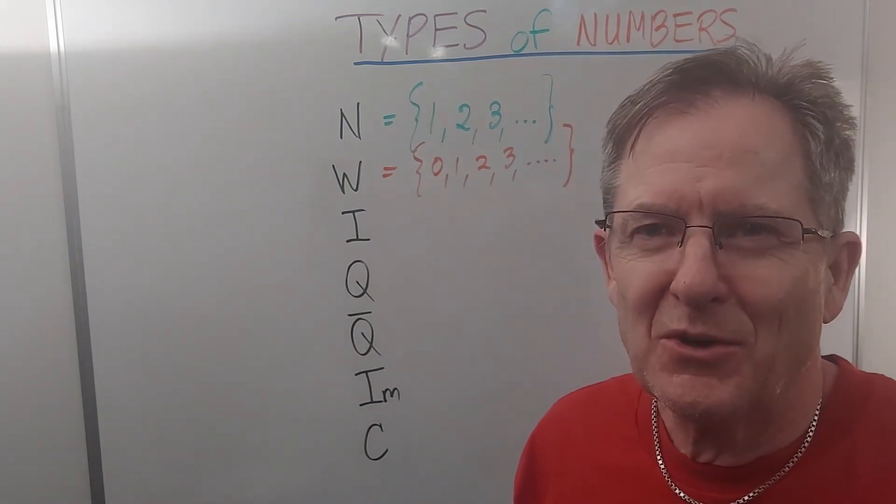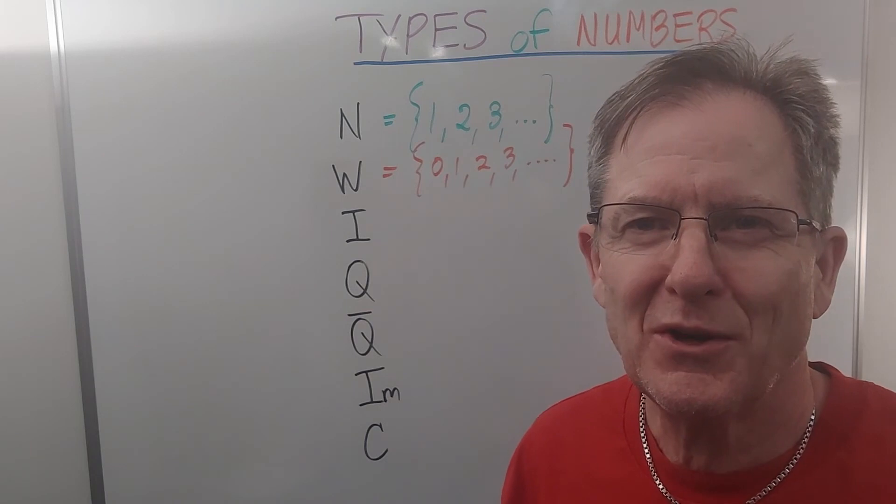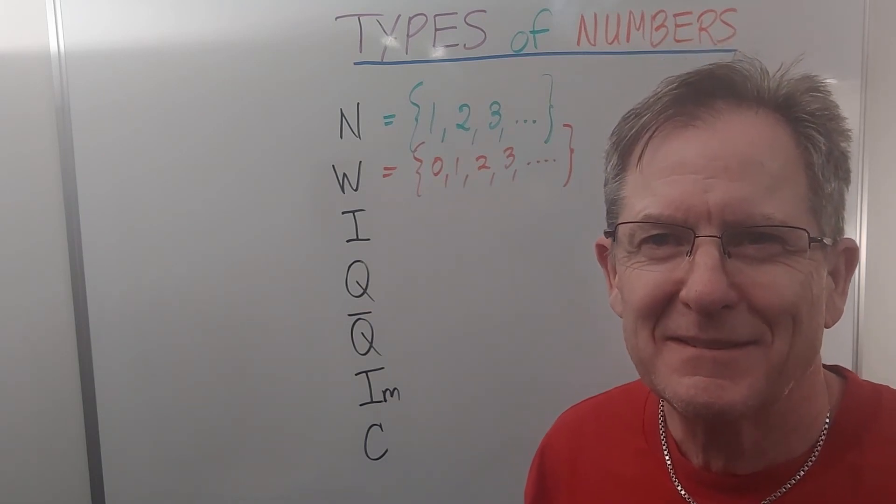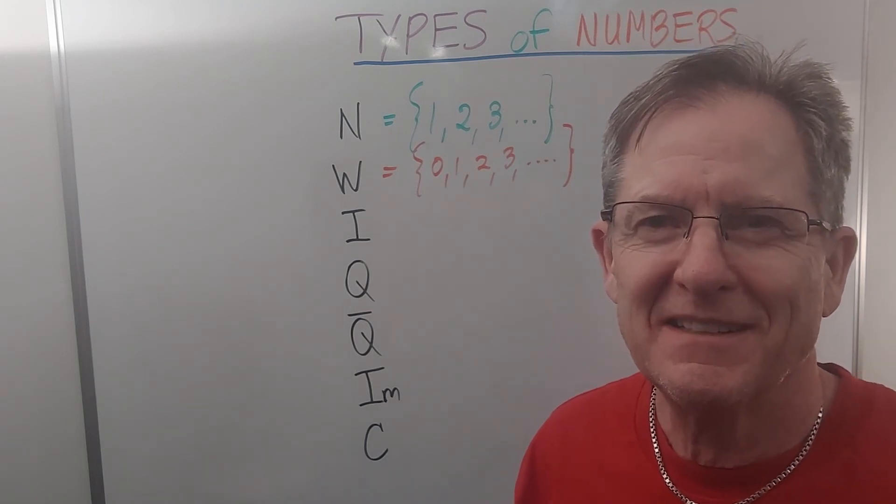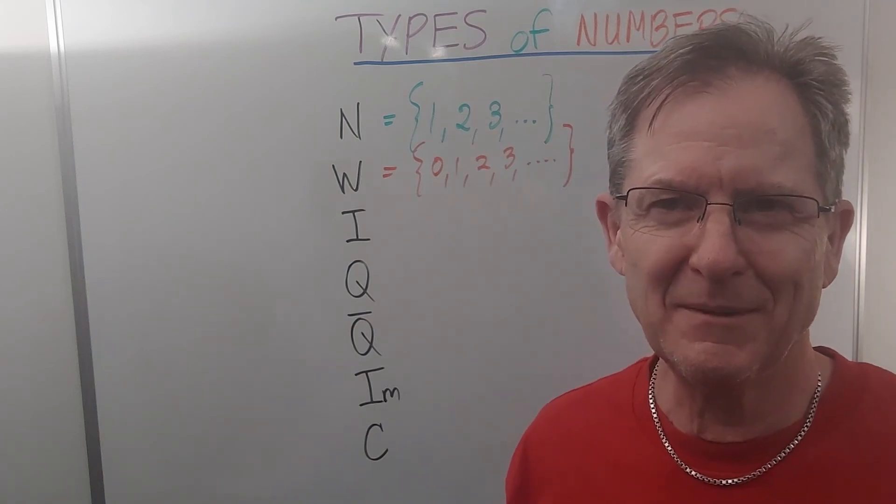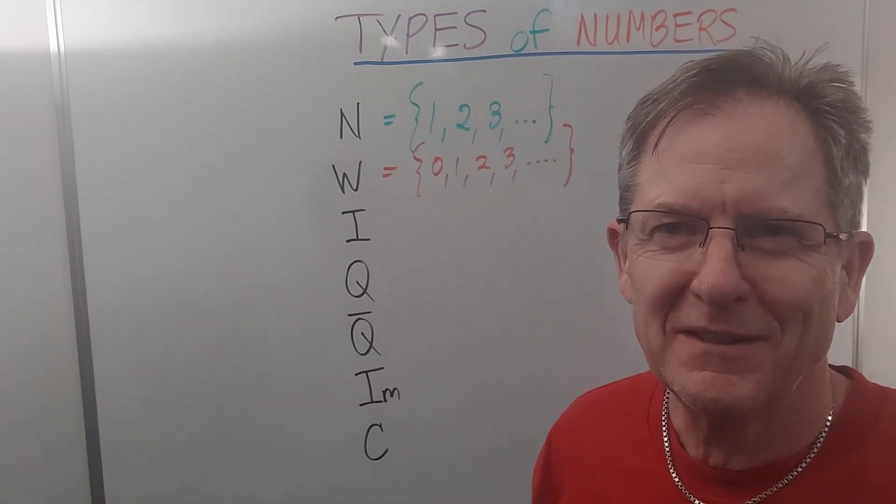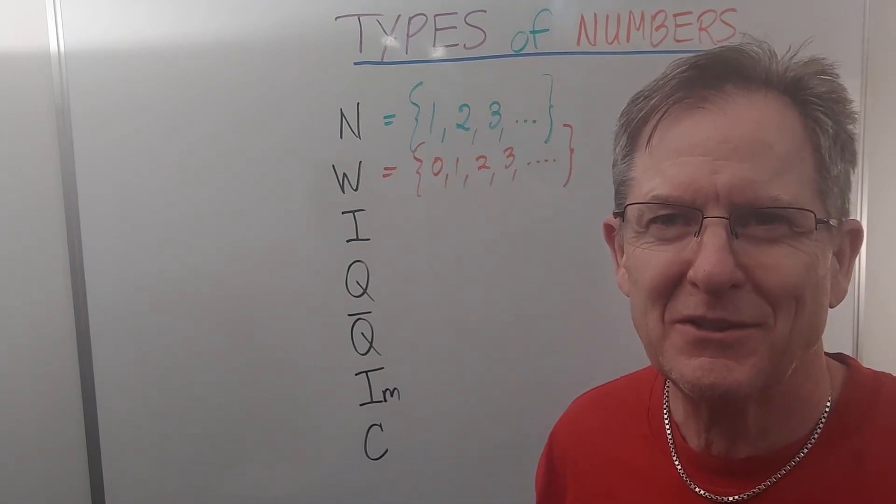In Canada we like to joke around and say that the number 0 was invented to explain the Toronto Maple Leafs, since they haven't won the Stanley Cup since 1967. That's one of our hockey teams. You can apply it to one of your least favorite sport teams in your country.